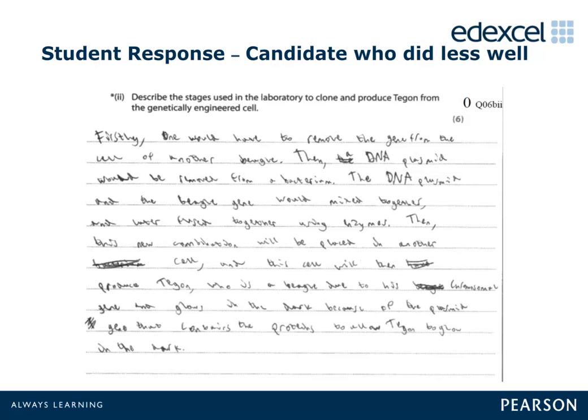This answer was confused and incorrect. Although the candidate had an idea about how organisms are cloned, they failed to be specific in the first instance about the cell which was to be cloned, and then proceeded to make comments more appropriate for genetic engineering rather than cloning. Thus the candidate did not score any marks.